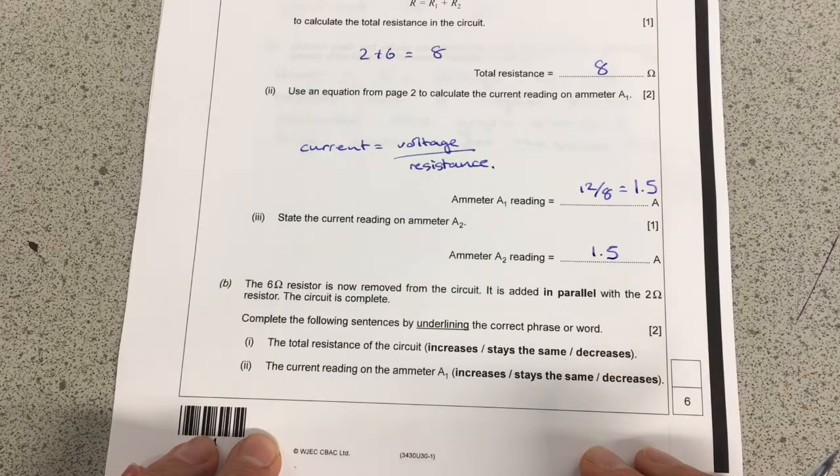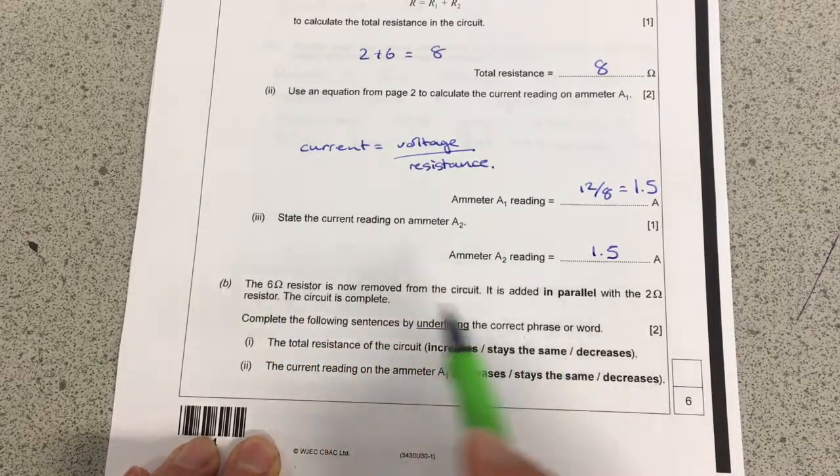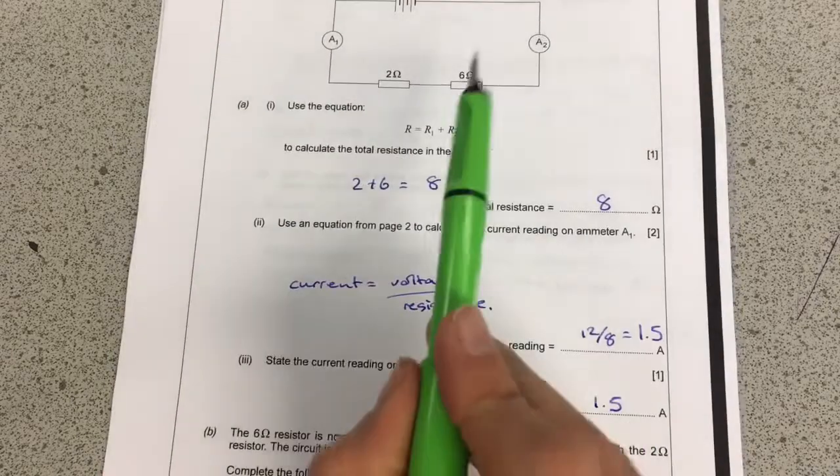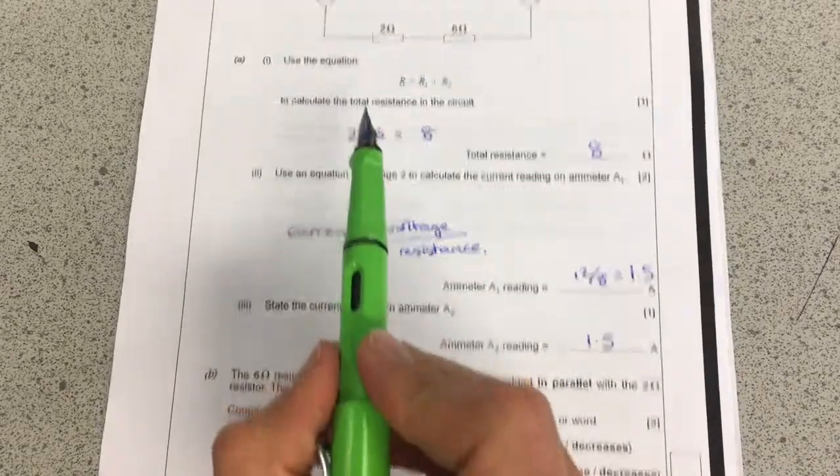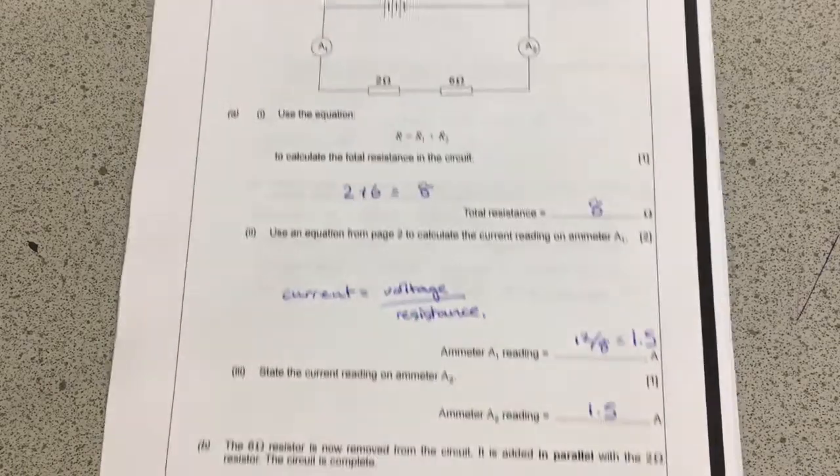So, the next bit is asking us if we take away the 6 ohm resistor from up here and we put it in slightly differently so it's in parallel with this one here. So now we have two resistors in parallel.